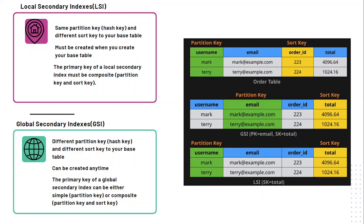As we can see in the image, the base table is this order table where the partition key is username and order ID. But when we are creating a global secondary index, we change both our partition key and sort key. That's all for this video. Stay tuned for the upcoming video where we will do a demo on the basic concepts of DynamoDB along with indexes. Thank you.